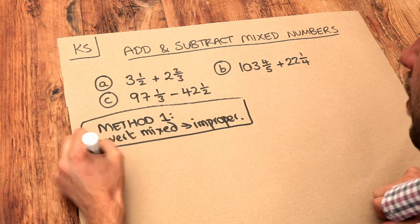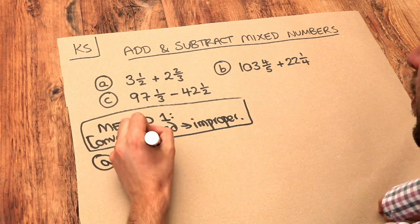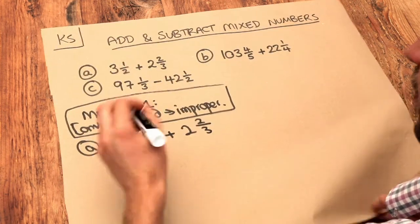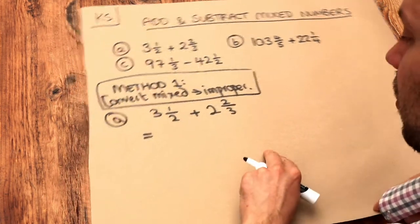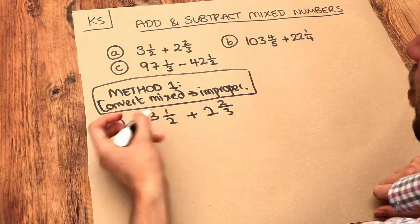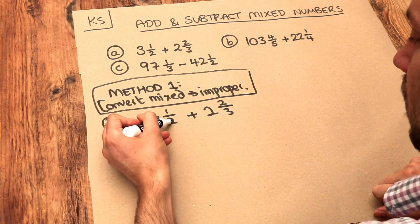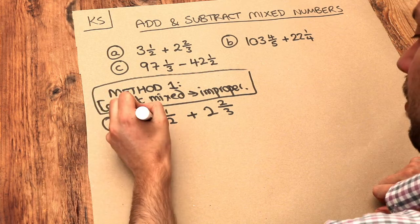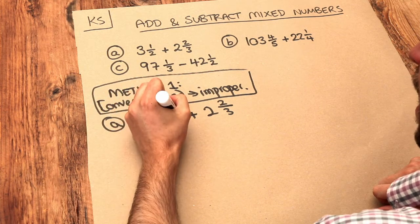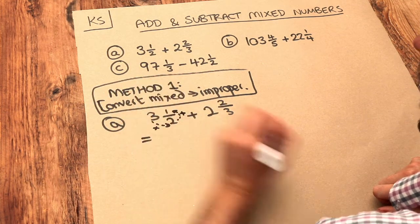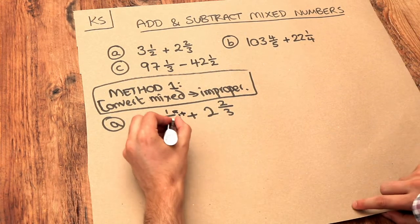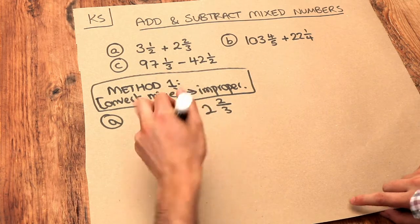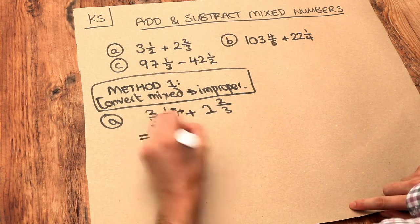If we have, for example, three and a half plus two and two thirds, and we convert these to improper fractions, remember we do the whole part times the denominator — that's six — and add the numerator — that's seven. So three times two plus one is seven, so it's seven over two — we keep the same denominator.